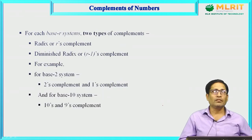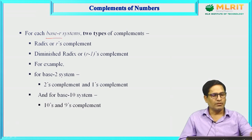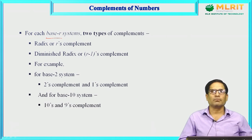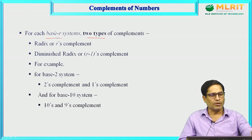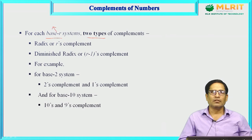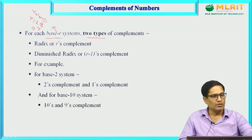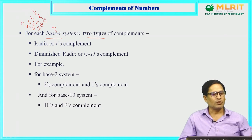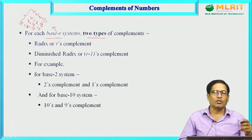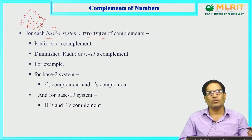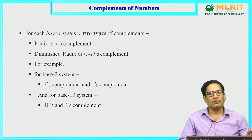For each base-r system, two types of complements exist. The number systems we have discussed are: decimal (r=10), binary (r=2), hexadecimal (r=16), and octal (r=8). We are going to discuss complements primarily in the context of binary numbers, although the same concept applies to any number system.